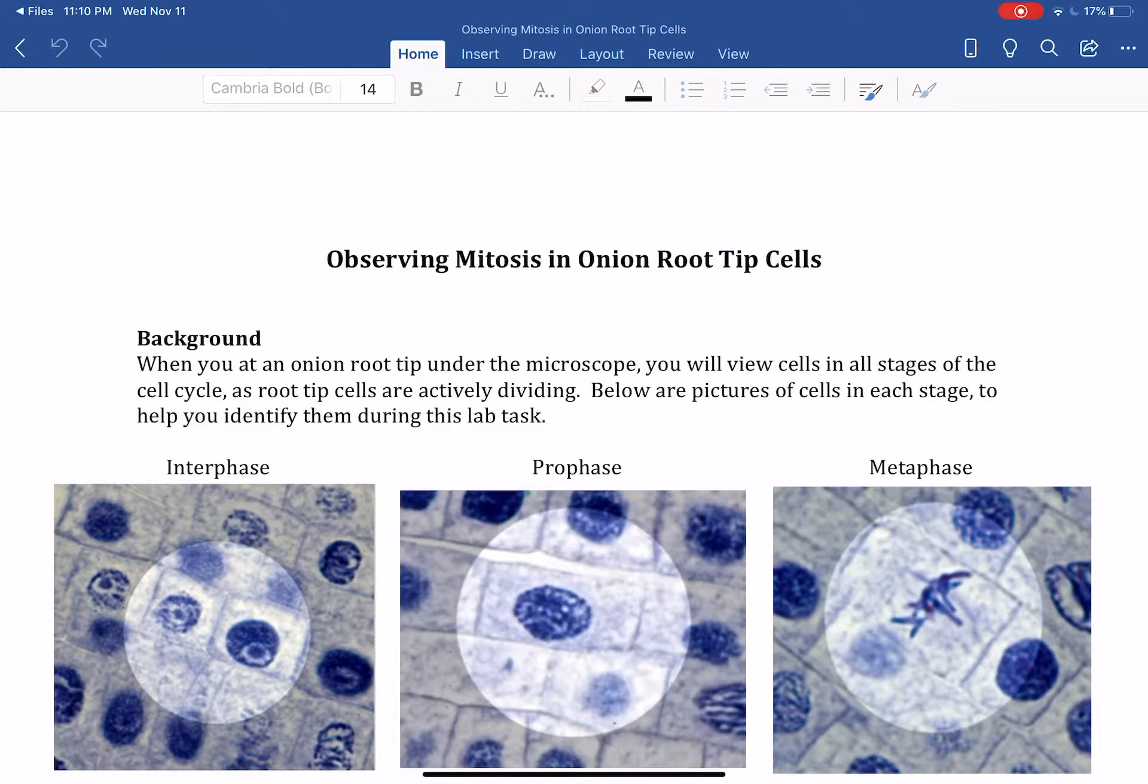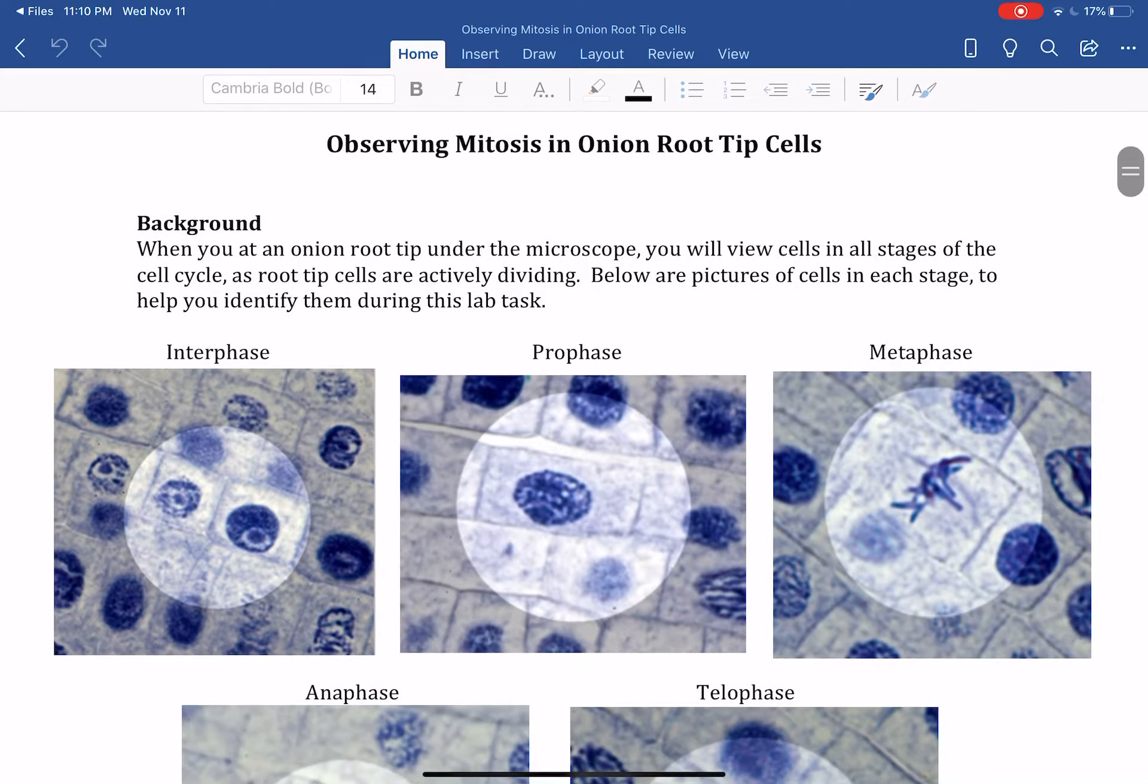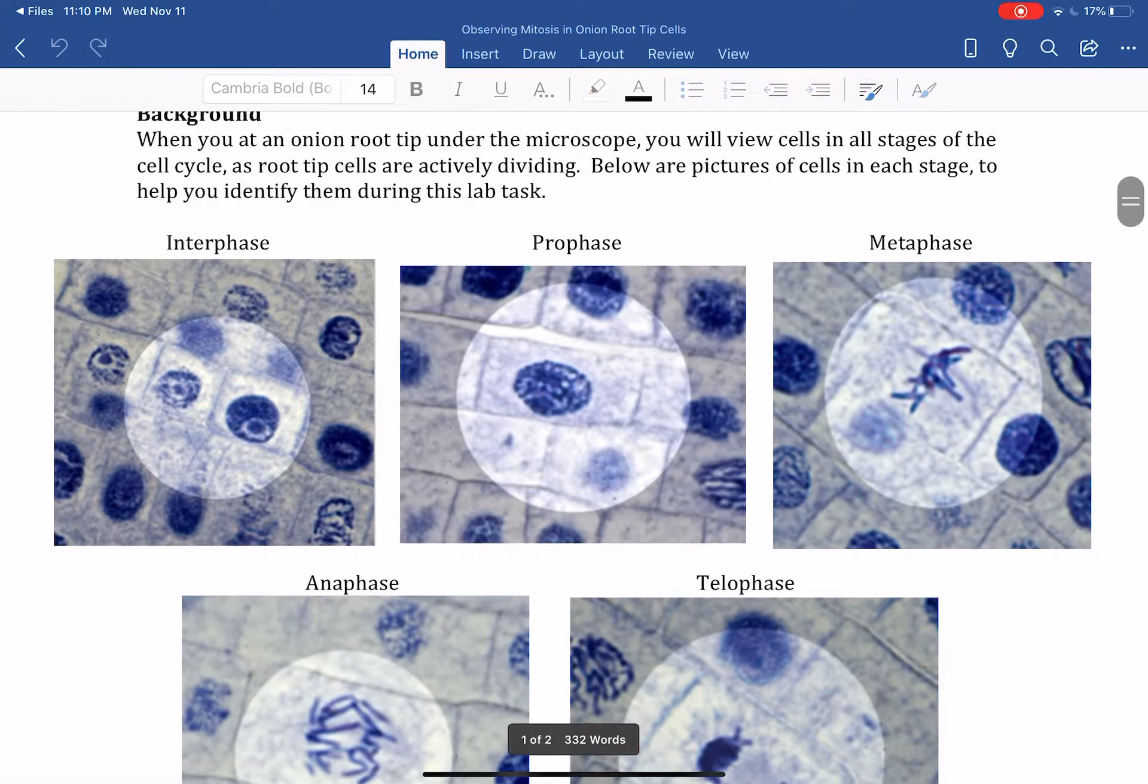We are going to look at microscopic images of cells in mitosis in onion root tip cells. This page you should have in your binder - it shows you the major stages of the cell cycle.